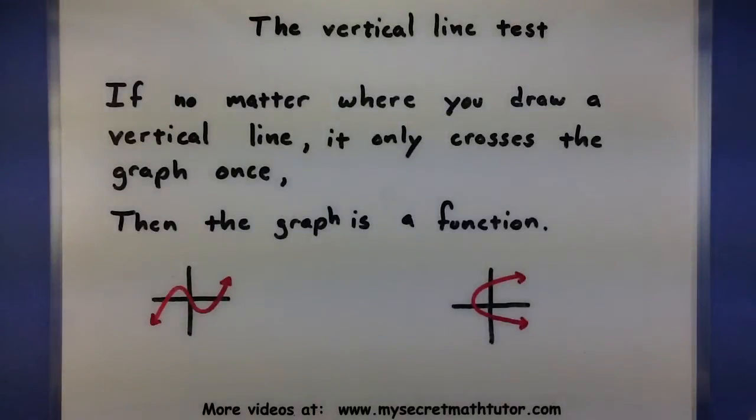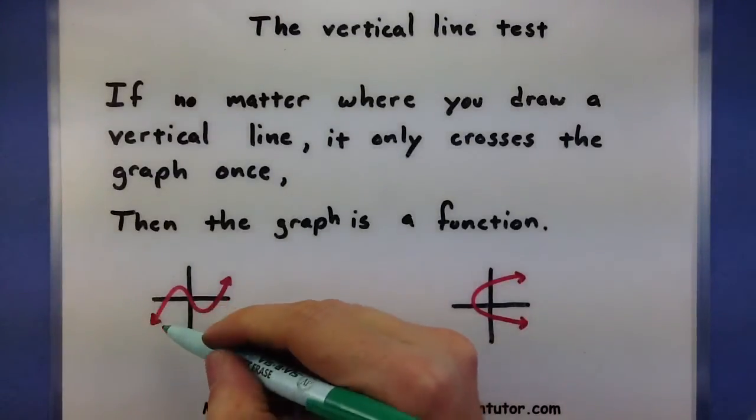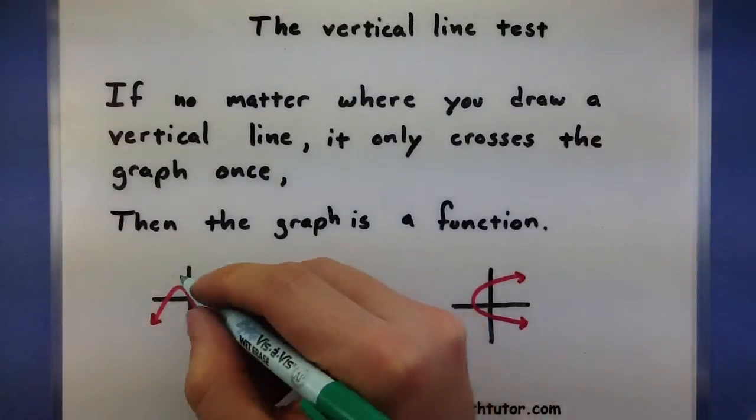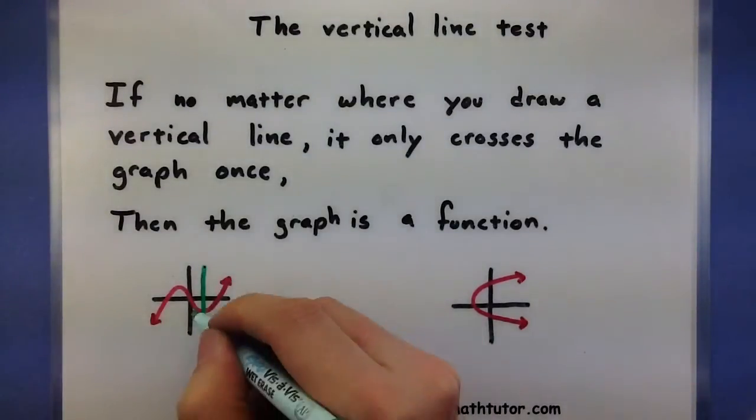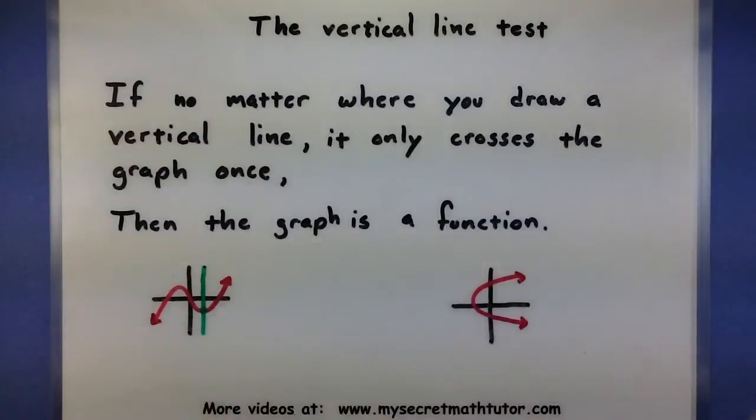Let's quickly go through two examples to see how this works. So here I have the graph of a relation, and I want to imagine trying to draw some vertical lines in here. Now as you can see, no matter where I draw this vertical line, it's going to end up crossing only once. And it wouldn't matter if I put this line here or even way over here, it would still only cross once.